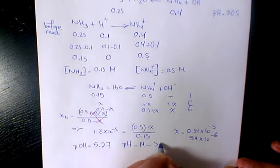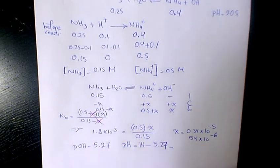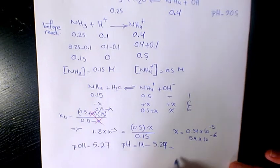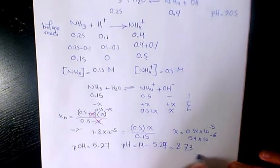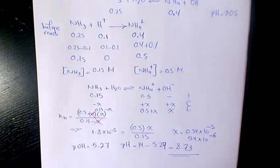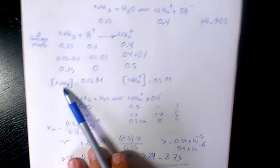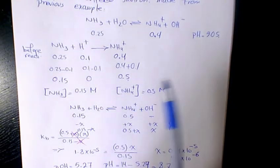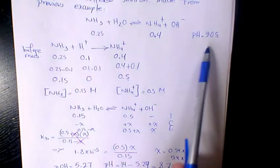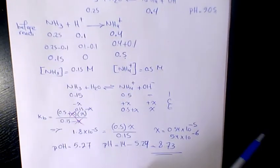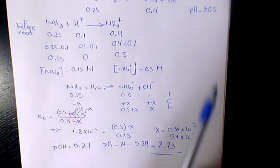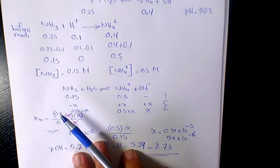That will be 8.73. So in the previous example we found the pH as 9.05. Now with adding 0.1 mol of gaseous HCl it dropped to 8.73. So as you see here, it didn't change much because of the buffered solution characteristic.